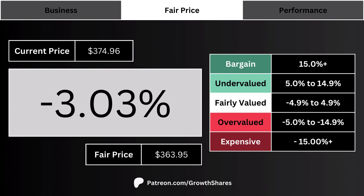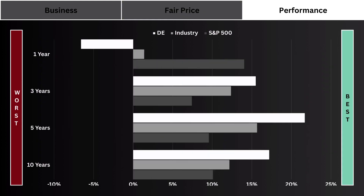Here's the current stock price along with the company's fair price so we can figure things out quickly. The big percentage number on the screen is basically how undervalued or overvalued the stock is relative to its fair price — the more positive the percentage, the more undervalued the stock is right now.